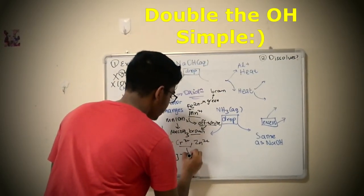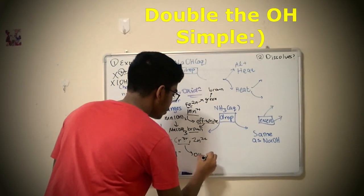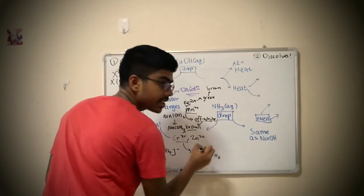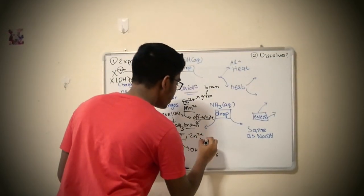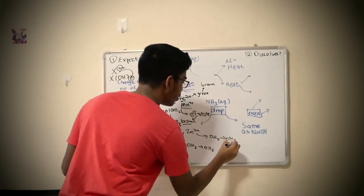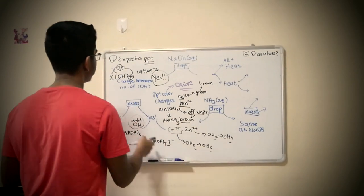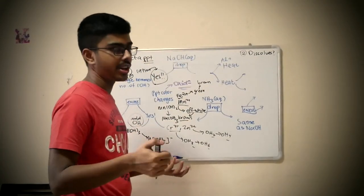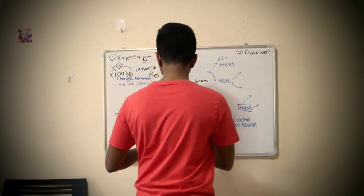For the remaining two ions, which is chromium 3+ and zinc 2+, you double it. So for this one it becomes from OH3 to OH6. For this one, from OH2 it will become OH4. But then I get all these numbers back to this point when charge becomes number of OH.